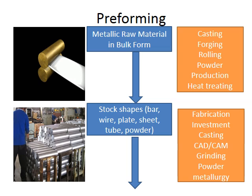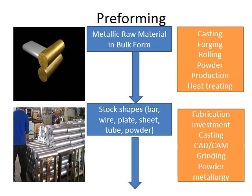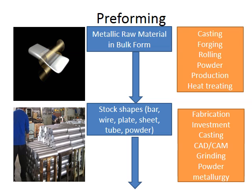As we discussed in a previous section, this is done to alter the mechanical properties — to make it tougher, to strengthen it. And then it's formed into its stock shape. Stock shapes can be bars, wires, plates, sheets, tubes, or powder.